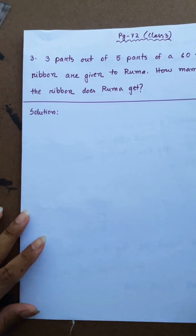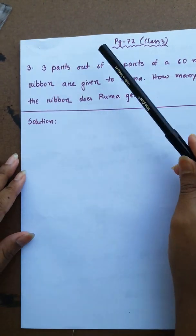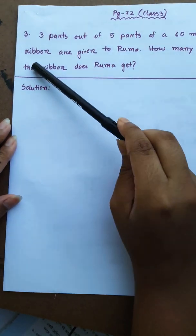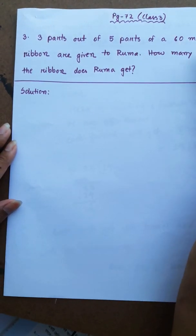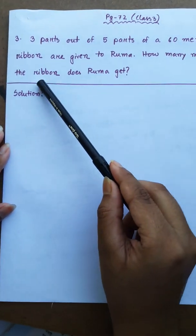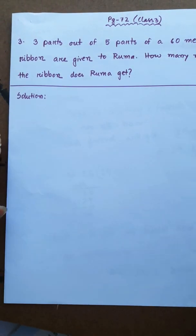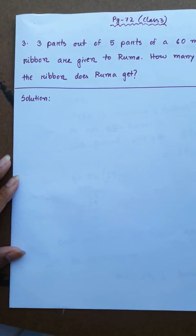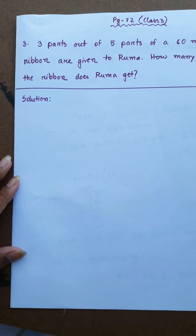Now the next problem, number 3: Three parts out of five parts of a 60-meter long ribbon are given to Ruma. How many meters of the ribbon does Ruma get? The ribbon is 60 meters long and is divided into 5 equal parts.